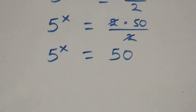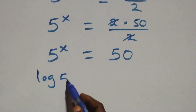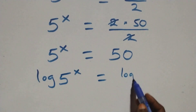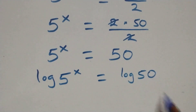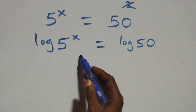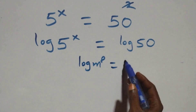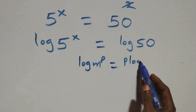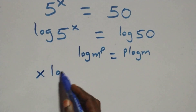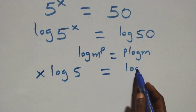The next step: we take the log on both sides. So we have log of 5 raised to power x equals to log 50. We apply the power rule of logarithms — when we have log m raised to power p, this is the same as p·log m. So all we have becomes x·log 5 equals to log 50.